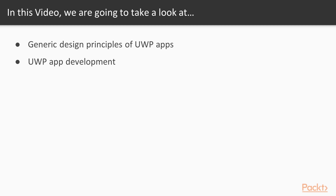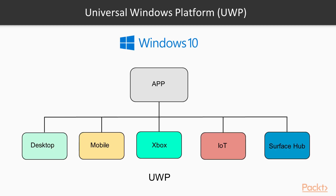In this video we will look at generic design principles of UWP apps and UWP app development. With the launch of Windows 10, the code has been improved and generalized to provide a single set of APIs, to create a single app which can run on all device families running the Windows 10 operating system. They named it Universal Windows Platform.